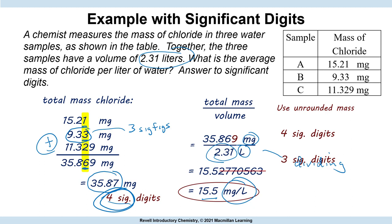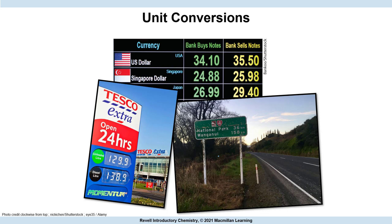So this was a mixed calculation — we had to add first, then divide. You have to apply the two separate rules. For addition: fewest digits after the decimal point. For division: least precise measurement in terms of number of digits, which is three.